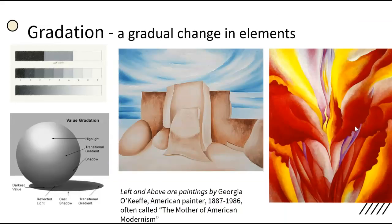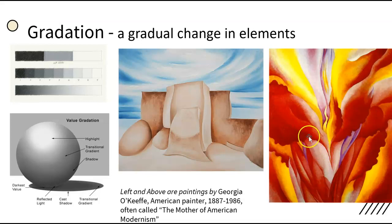Gradation is a gradual change in elements. You can see Georgia O'Keeffe using gradation of value in the landscape in the center of this slide. You can see the value change from dark to light as it moves across the adobe surfaces at different points in the painting. In her flower painting on the right, she also uses gradation — both a gradation of value and a gradation of color — as in this area of the painting where she blends the hues smoothly from yellow to orange to red.